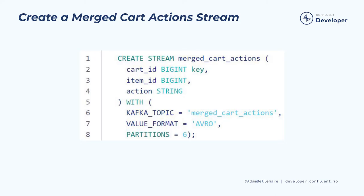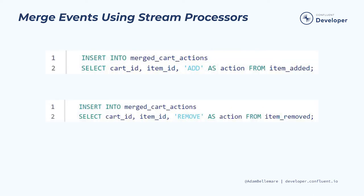Next, you will create a merged cart action stream. ksqlDB does not support creating aggregates from multiple event streams, so we're going to merge the add and the remove events into a single event stream and refactor their schemas slightly. You will then merge the events into the merged cart actions by creating a simple streaming processor for each of the add and remove.